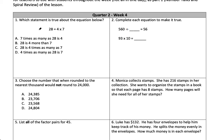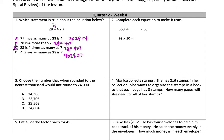Number 1: which statement is true about the equation 28 equals 4 times 7? Another way to say this is 28 is 4 times as many as 7. The equal sign we can read as 'is.' Option A — 7 times as many as 4 — would mean 7 times 28 equals 4, which is not true. Option B — 28 is 4 more than 7 — is also not true. Option C — 28 is 4 times as many as 7 — yes, that's correct. Option D — 4 times as many as 28 is 7 — that's 4 times 28, also not true. So the answer is C.